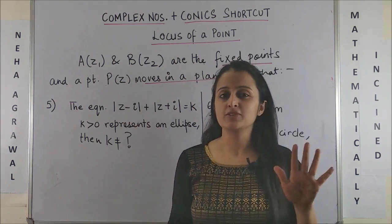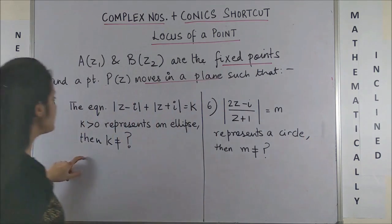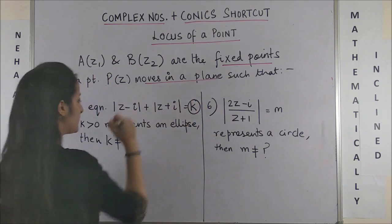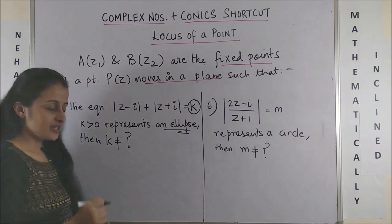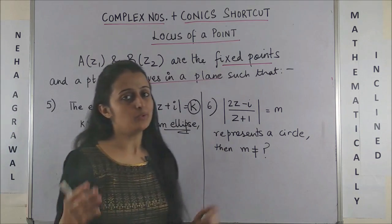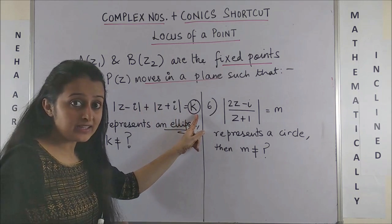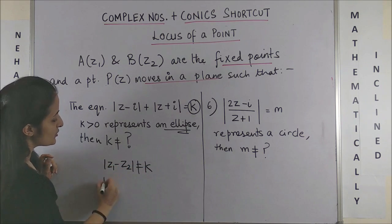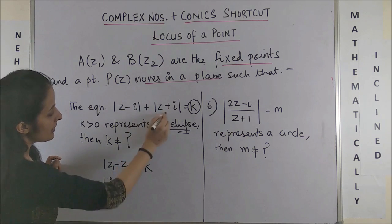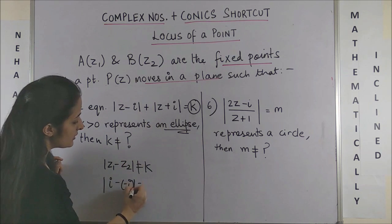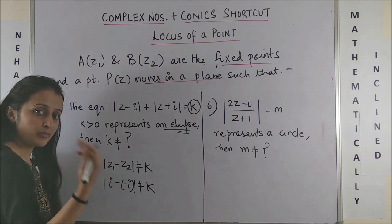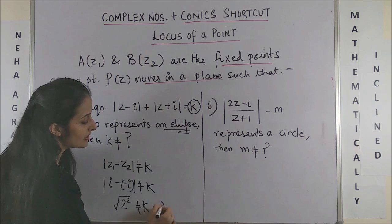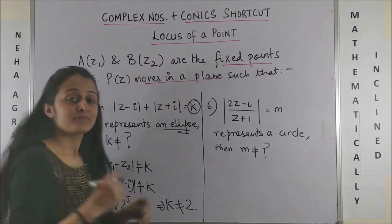Coming to the next two really interesting questions. Question 5 says if the equation |z-i| + |z+i| = K represents an ellipse, then what is K not equal to? Well, you have already discussed when it's plus and it is equal to K, it cannot be an ellipse provided |z₁-z₂| is not equal to K. Here |z₁-z₂| where z₁ is i and z₂ is -i should not be equal to K. So modulus of 2i would be simply square root of 2 squared which is not equal to K. In short, K should not be equal to 2.